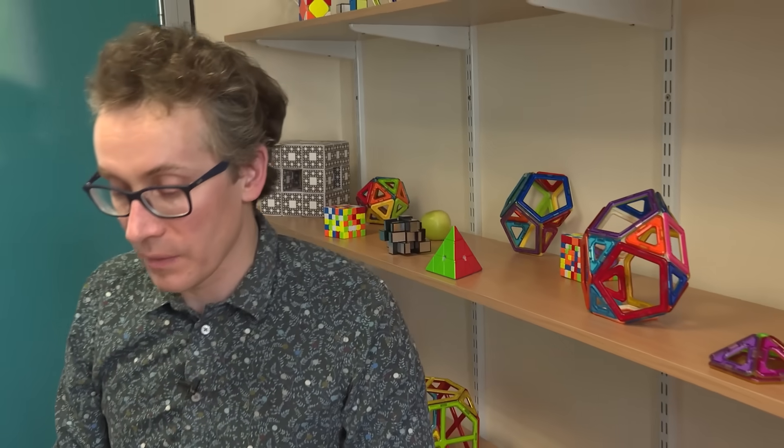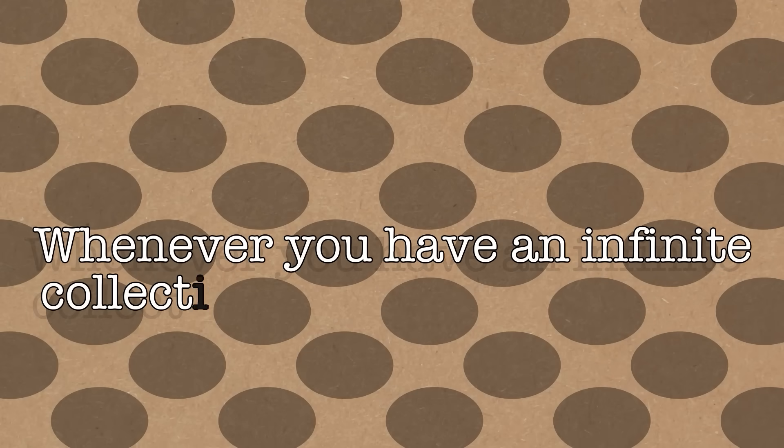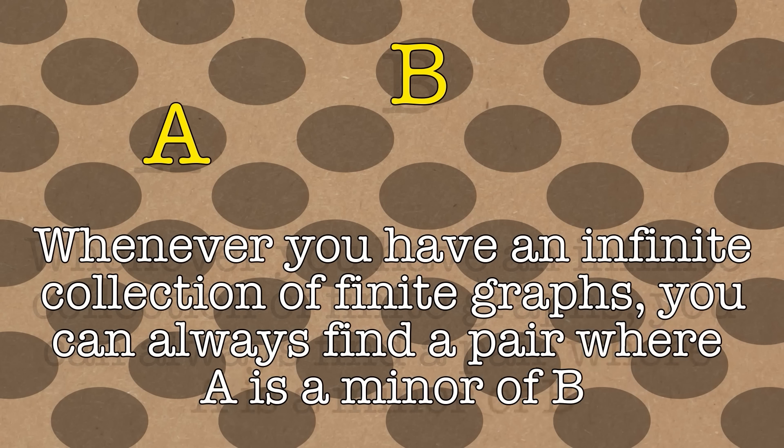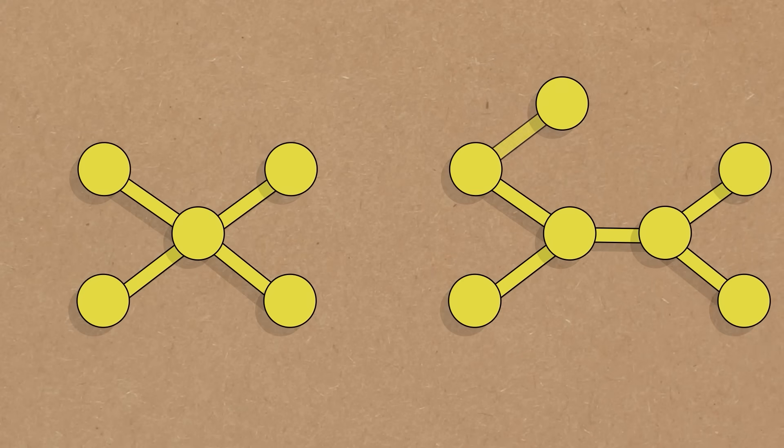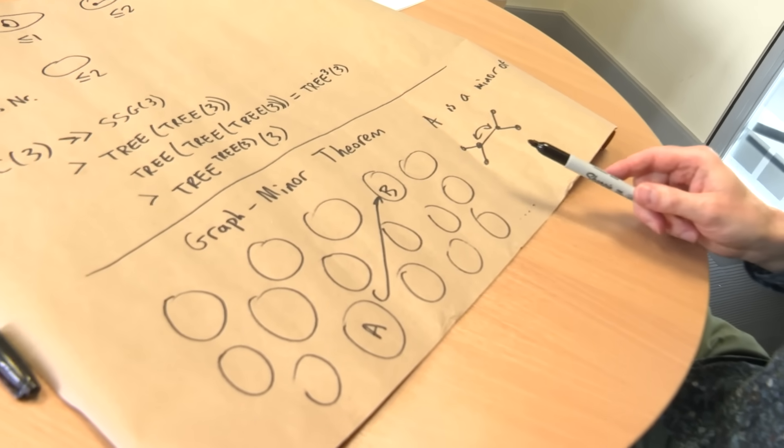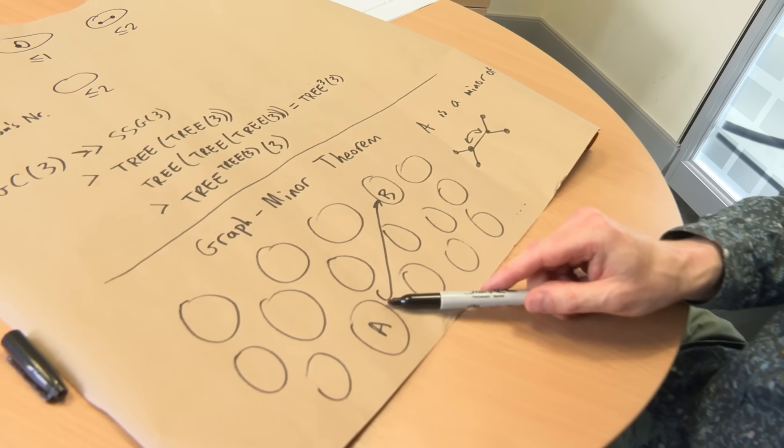He says this result dwarfs any other result in graph theory and may doubtless be counted among the deepest theorems that mathematics has to offer. So it's like a really, really serious bit of mathematics. The basic statement is whenever you've got some infinite collection of finite graphs, right? So I'm drawing lots of pictures of finite graphs, and actually it doesn't matter whether we want to focus on simple graphs or whether we want to allow what we might call multi graphs, where you've got the loops and parallel edges. Either way is fine. But they've got to be finite graphs. So finite numbers of vertices, finite numbers of edges. So whenever you've got an infinite collection of them, you can always find a pair, let's call them A and B, somewhere in there where A is sort of hiding inside B. Or more technically A is a minor of B.